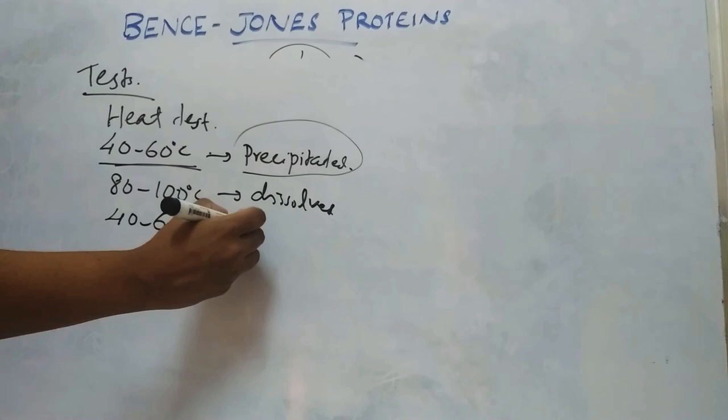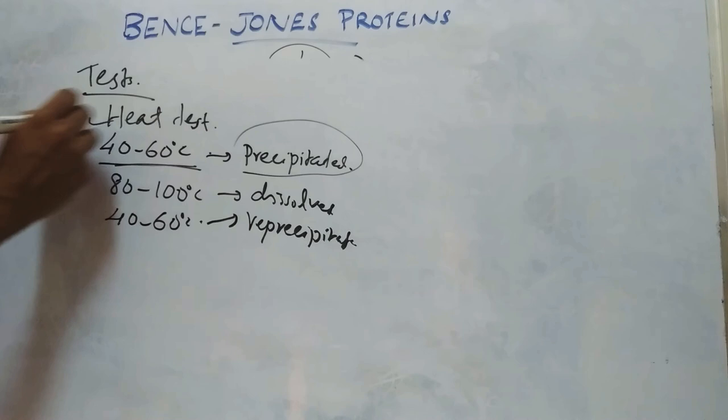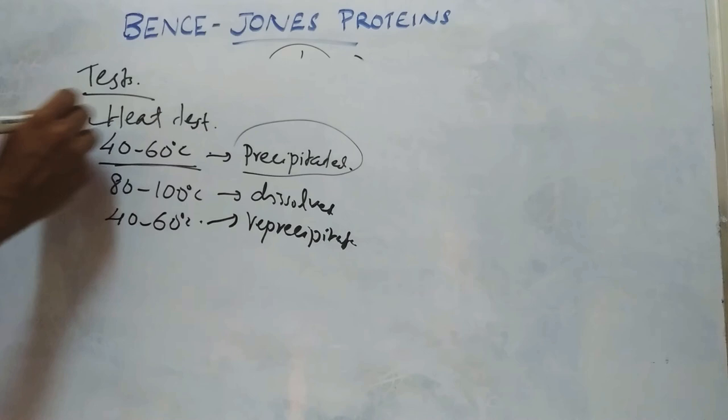Then after cooling to about 40 to 60 degrees, it will re-precipitate. That is the heat test for Benz-Jones proteins.